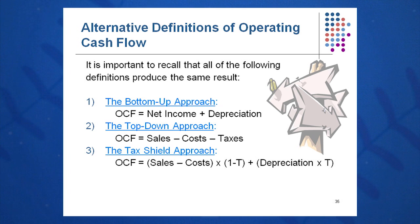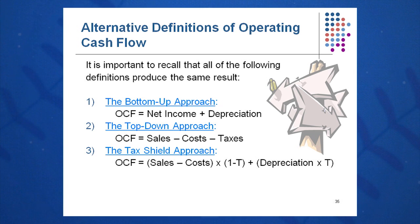Another alternative approach: if you've built your income statement all the way down to net income, you can take NPAT plus D. Net income plus depreciation equals OCF. That's the quick and dirty bottom-up approach.